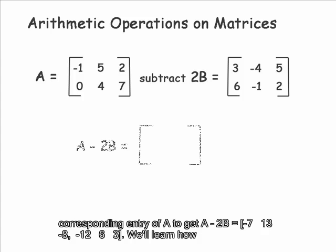we multiply each entry of B by 2 and then subtract the result from the corresponding entry of A to get A minus 2B equals, in row 1: negative 7, 13, negative 8, and in row 2: negative 12, 6, 3.